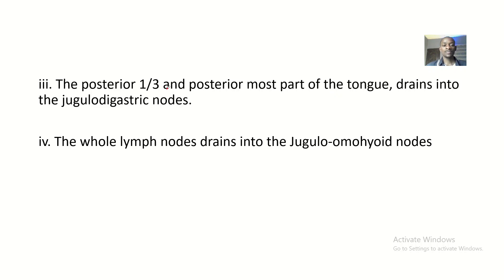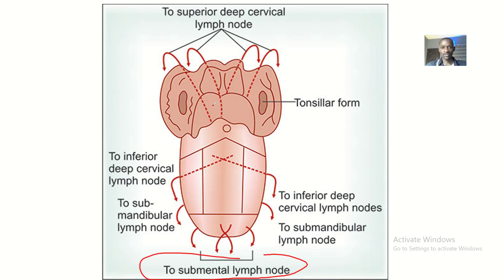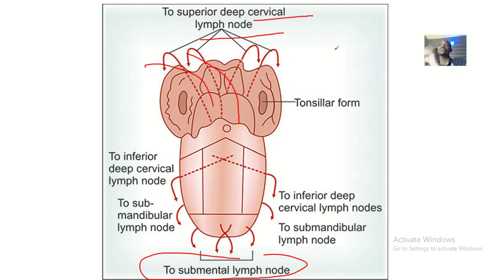The posterior one-third and the posterior-most part of the tongue drains into the jugulodigastric nodes. Some sources say cervical lymph nodes, but just stick with the jugulodigastric nodes. All the lymphatic drainage of the tongue ultimately drains into one set of nodes.